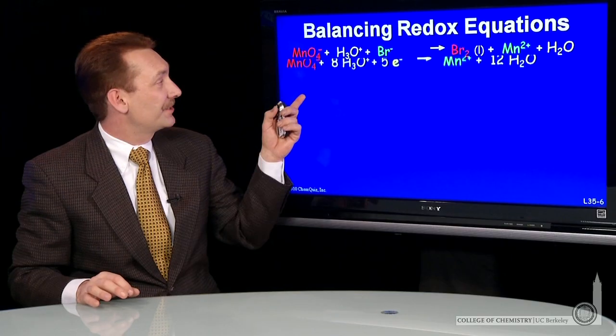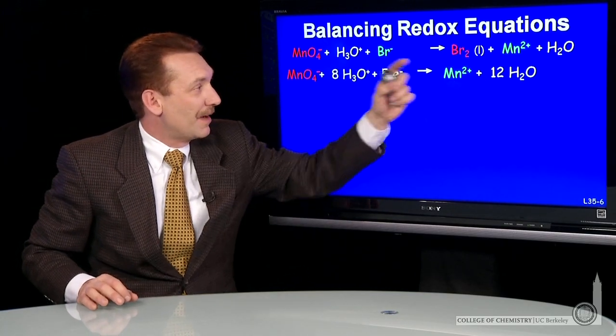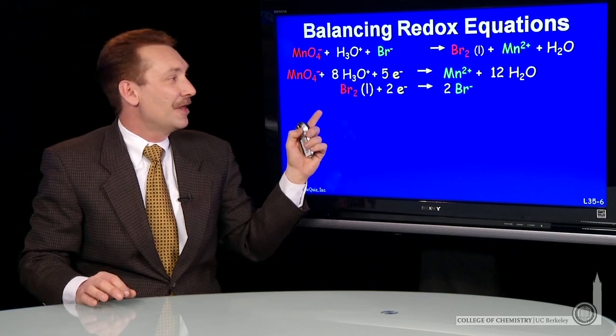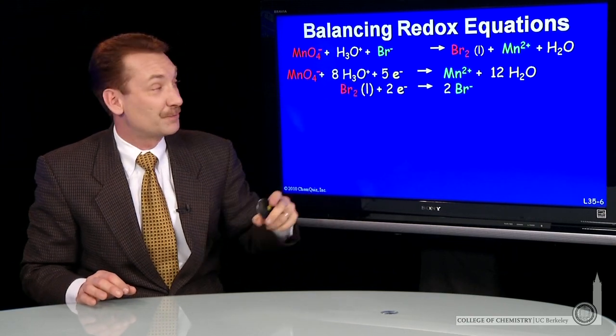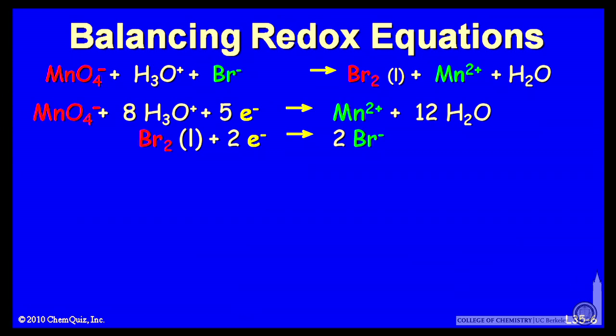So let's write them both down. Here's the permanganate and here's the bromine, both written as a reduction at this point. And we notice, well, first, the number of electrons is different.